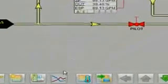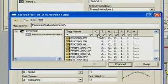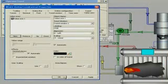A trend window can be assigned to a designated graphic or launched from the standard toolbar and opened in any graphic on the system. The operator can choose which tags to trend and save the results.